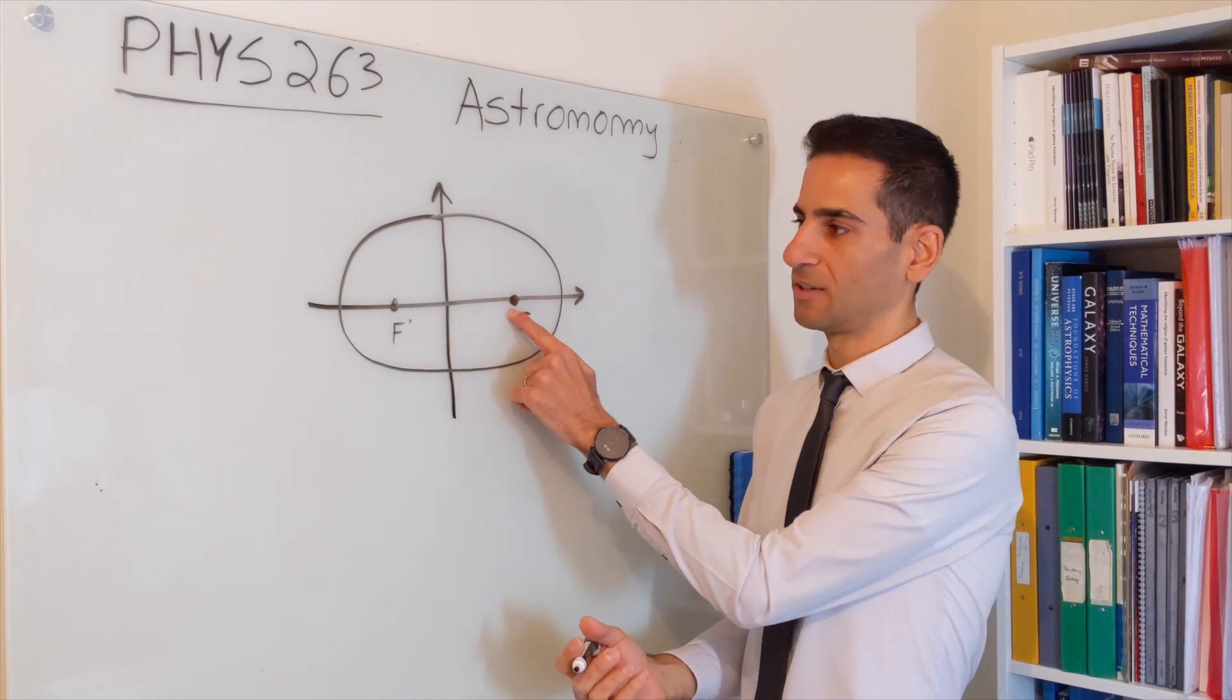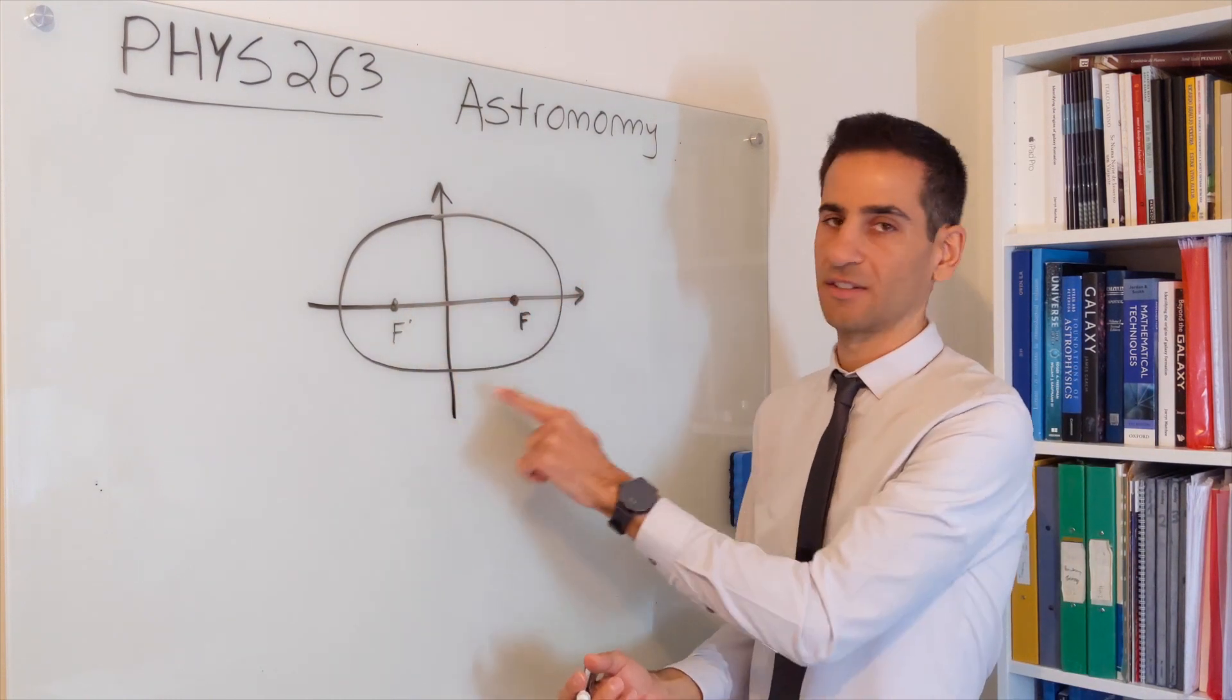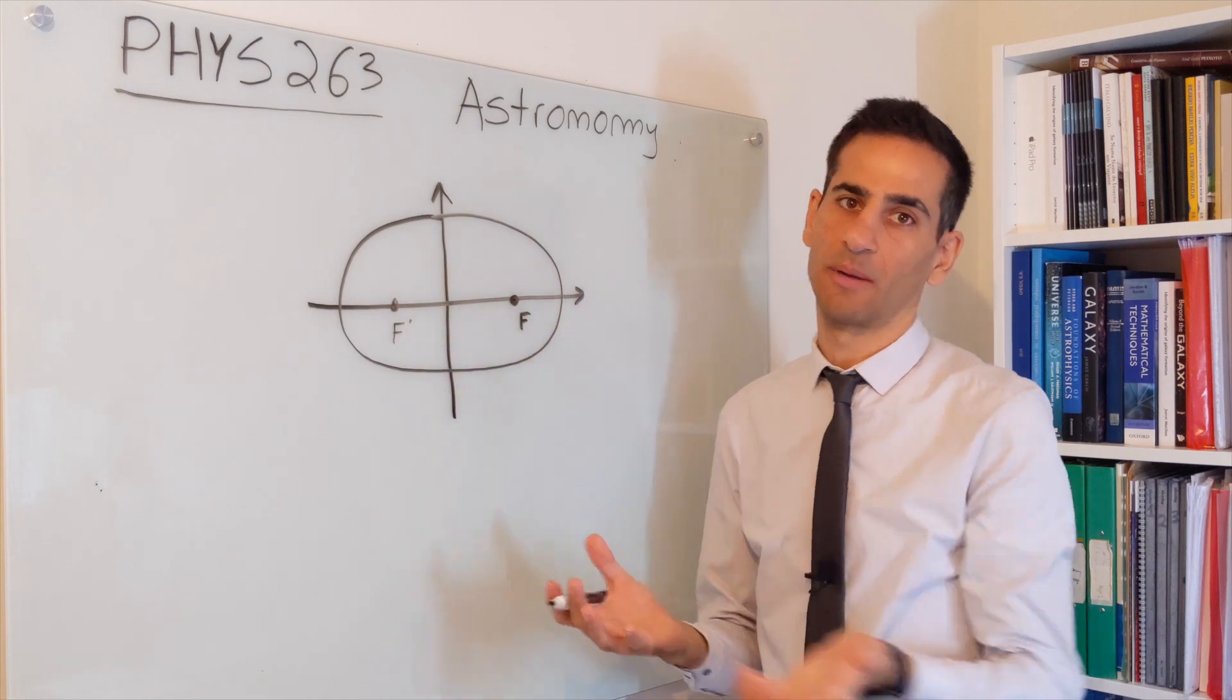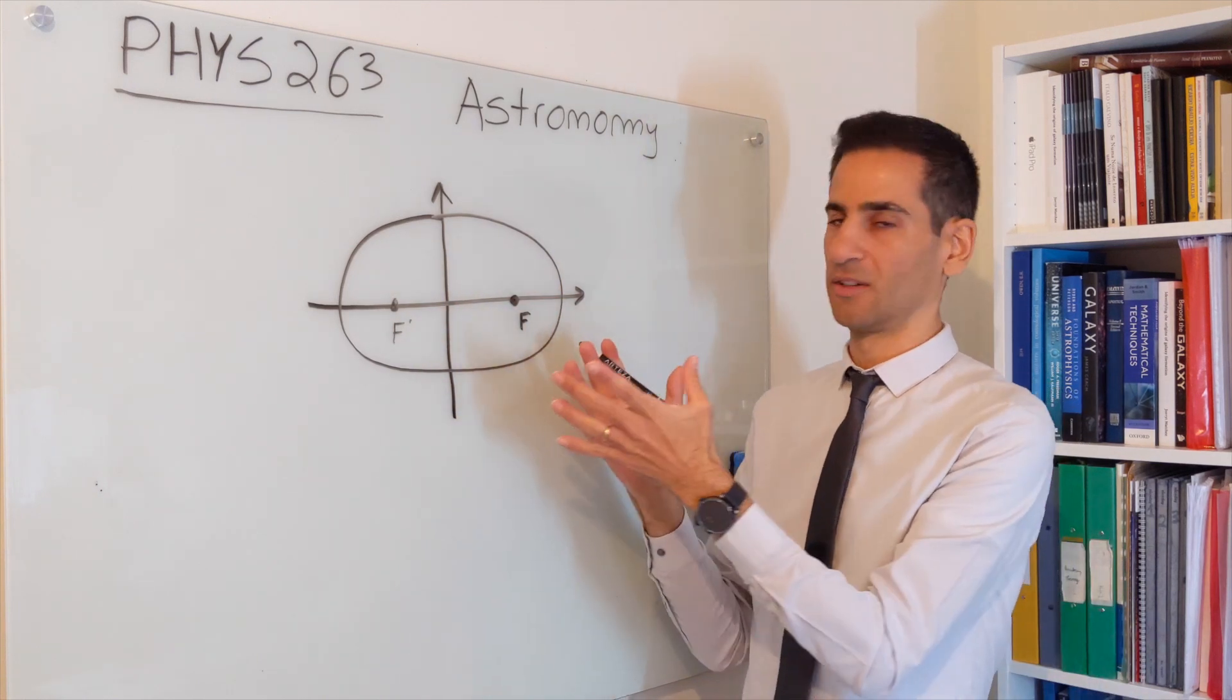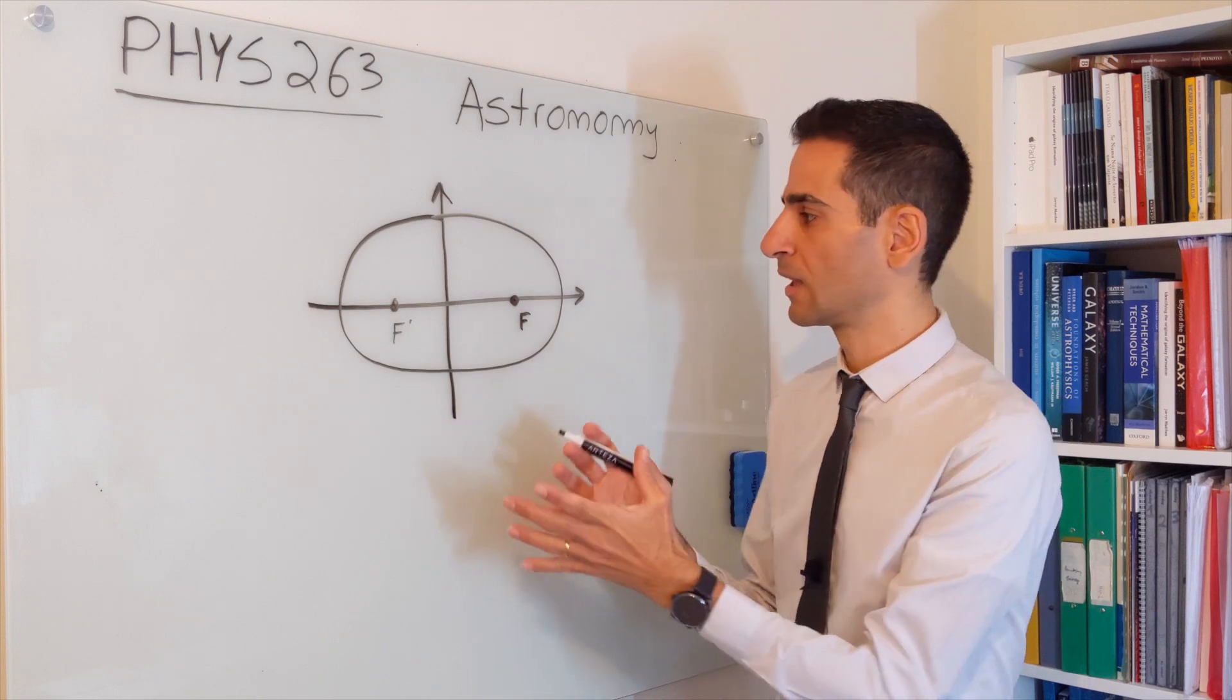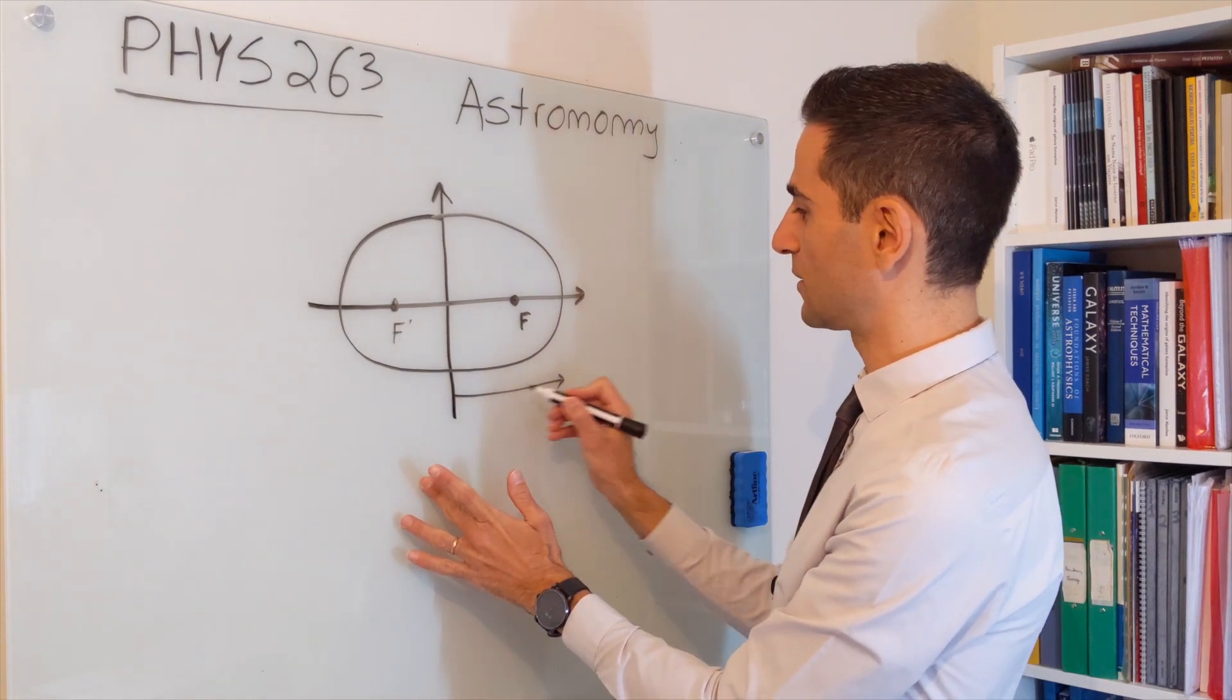This is important for Kepler's laws. It is assumed, for example, that the sun is here, the other one is empty, and the planets just go around. For Kepler's laws and our planets, this would be quite a big exaggeration.